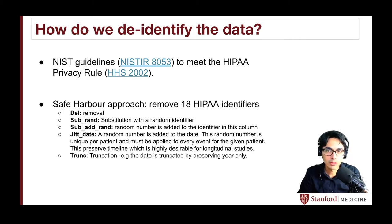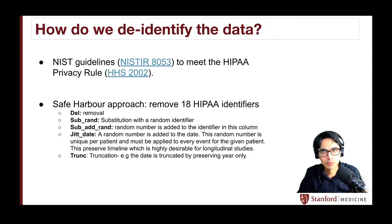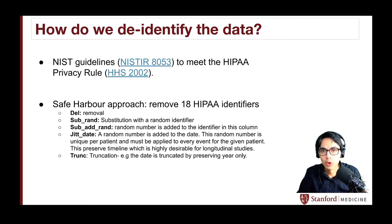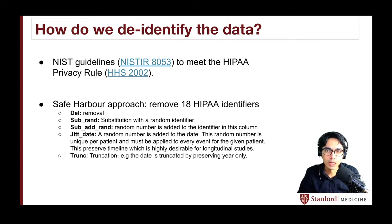Among those 18 identifiers, we have names, social security numbers, phone numbers, web pages, email addresses, and patient location, among others that could uniquely identify a patient if linked with any of the information in the health records.